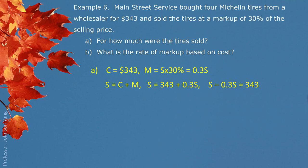Isolate S, and then solve S. We turn out the selling price $490. That's the answer for part A, that's how much were the tires sold.